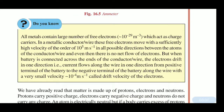Do you know all metals contain a large number of free electrons, which act as charge carriers? These free electrons move in all possible directions between the atoms of the conductor wire, and even then there is no net flow of electrons.